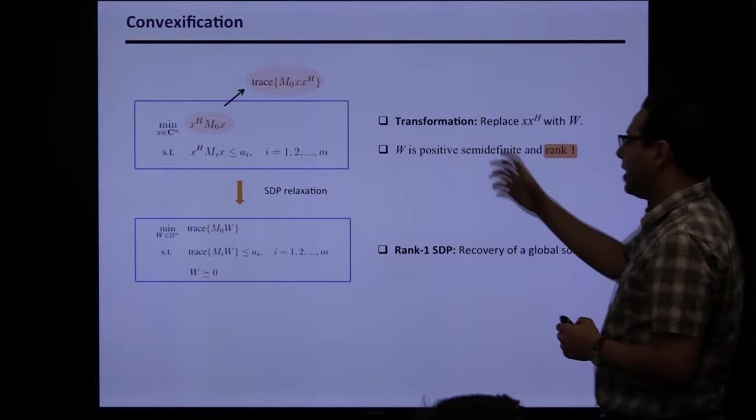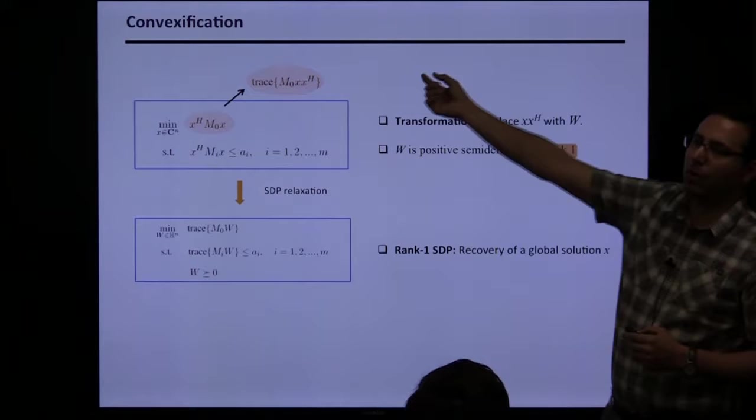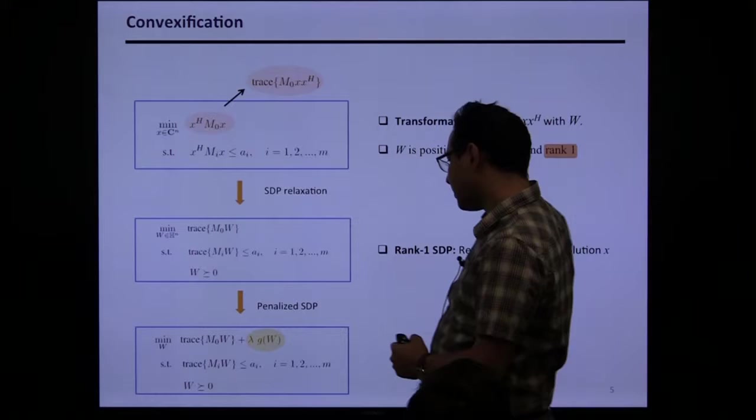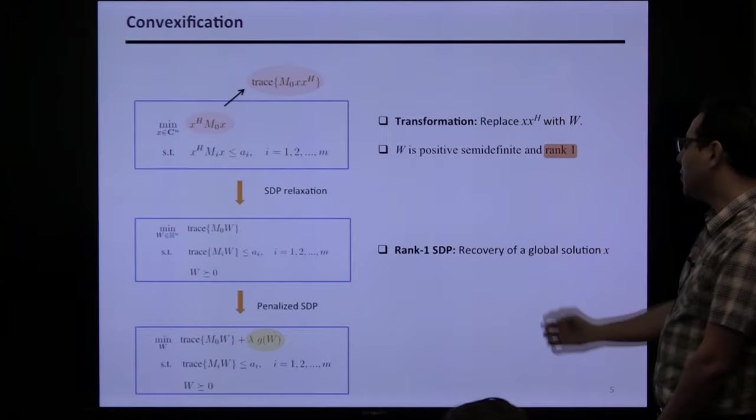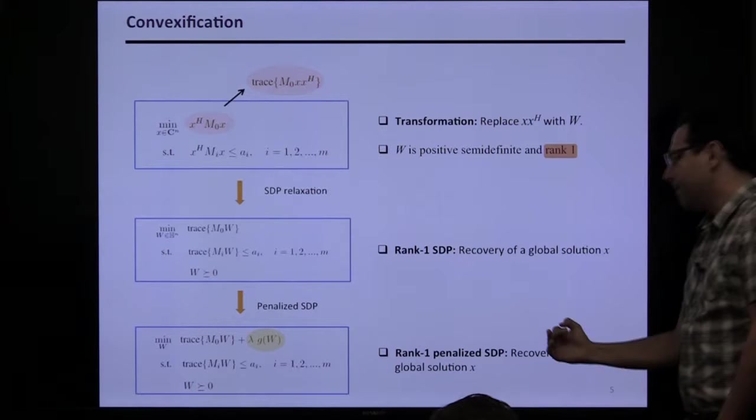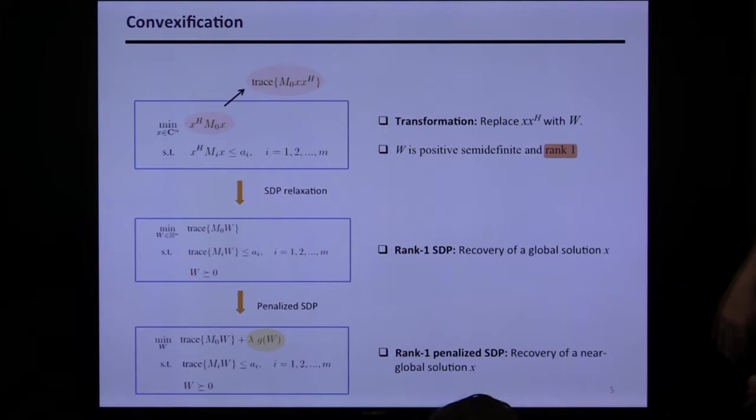We can declare victory saying we've linearized the problem in terms of W. But there's a caveat: W must be positive semidefinite and rank-one. If we drop the rank constraint, we get the semidefinite programming (SDP) relaxation, popularized around 1995 and applied to many areas. If this SDP relaxation has a rank-one solution, we can map it back to a global solution of the original problem.